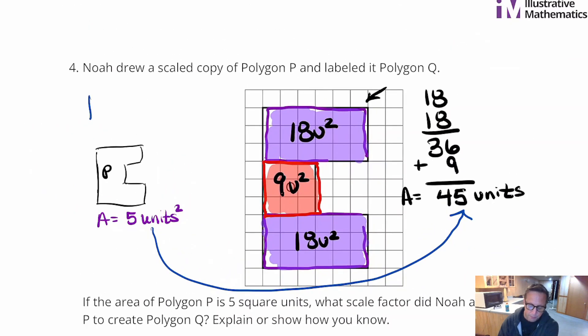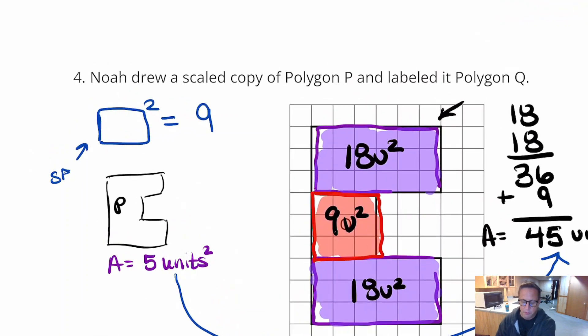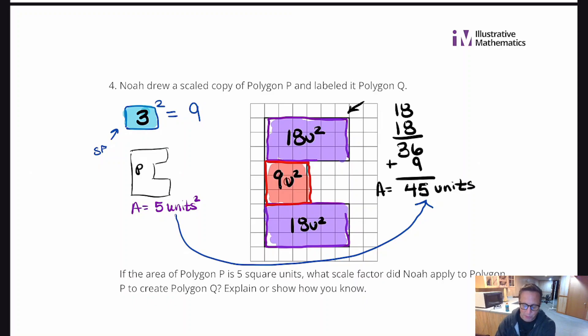What we have to think about here is if whatever the scale factor is, whatever squared, we want that to equal 9. So, what number squared equals 9? And, that's going to be 3. So, that is the scale factor that we used. The scale factor that was used from P to Q was 3. That was the scale factor of 3.